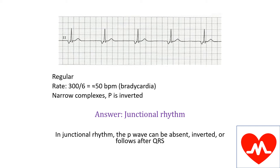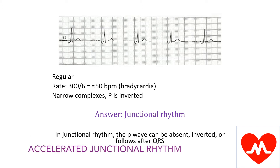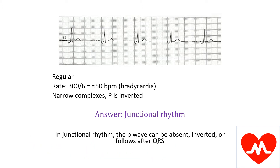If the rate is about 40 to 60, then it is junctional rhythm like in this case. However, if it is 60 to 100 beats per minute, then we call it accelerated junctional rhythm. If the rate is more than 100, then it becomes junctional tachycardia.